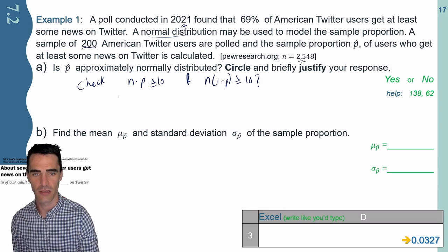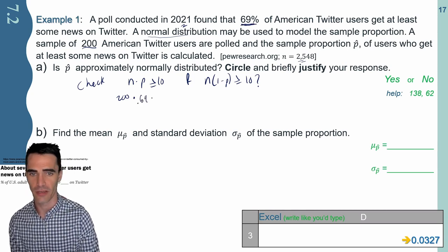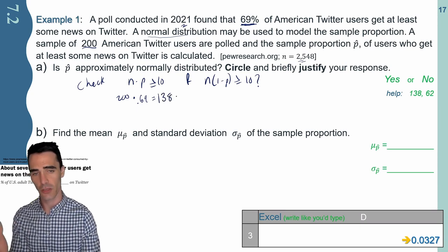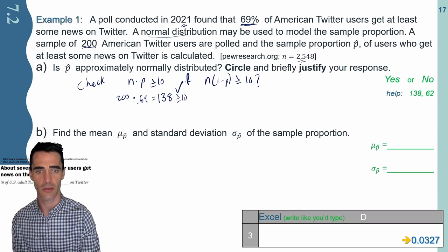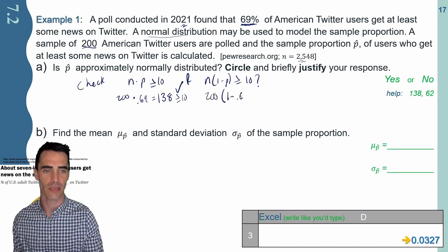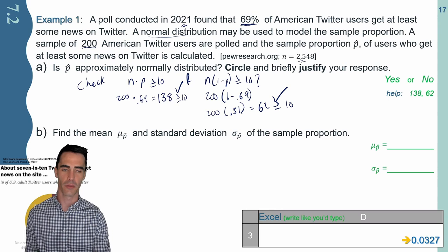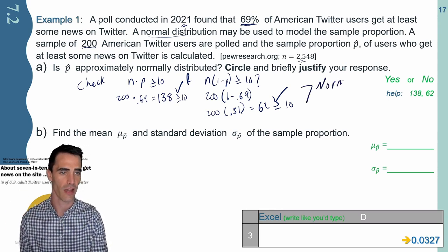N is 200 individuals that we talked to. For p, the proportion is 0.69. Multiplying those two together gives 138 — is it greater than or equal to 10? Absolutely. It satisfies the first condition. For the second, I still have n times one minus p: 200 times one minus 0.69, which is 0.31. That equals 62, which again satisfies the condition of being greater than or equal to 10. Both conditions are satisfied, so yes — p-hat is normally distributed.